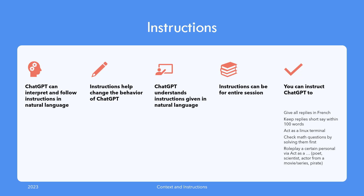Roleplay is not the only instruction you can give. You can give it detailed instructions for a role it needs to follow and it would understand in most cases. Some examples are: to start responding to all your further questions in French, keep conversations short and businesslike confined to 100 words, or check a math question.